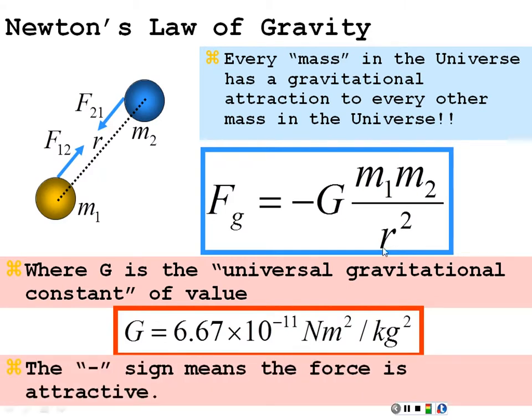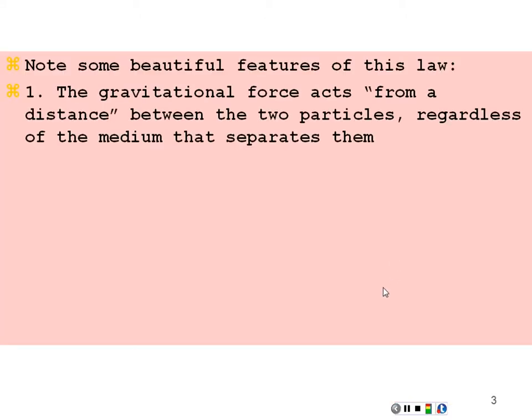The negative sign means this is an attractive force between masses. The gravitational force acts from a distance between two particles, regardless of the medium that separates them. For instance, the earth is attracted to the sun, and that force exists at a distance regardless of what passes in between — even if the moon passes between the earth and the sun in a solar eclipse, the earth doesn't go flying off into space.